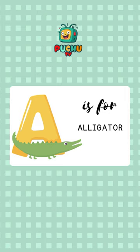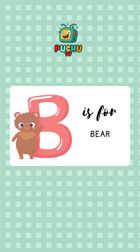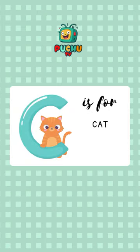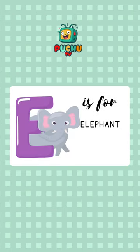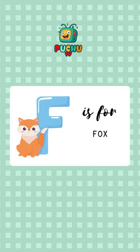A is for alligator, B is for bear, C is for cat, D is for deer, E is for elephant, F is for fox.